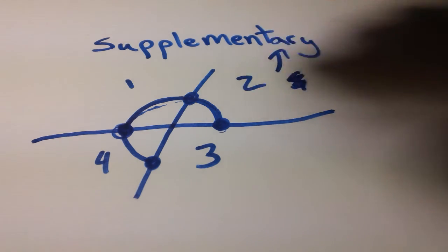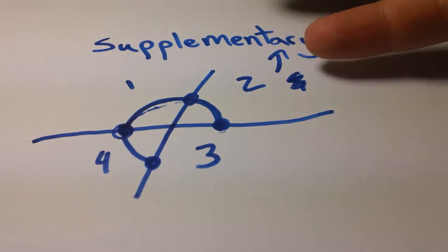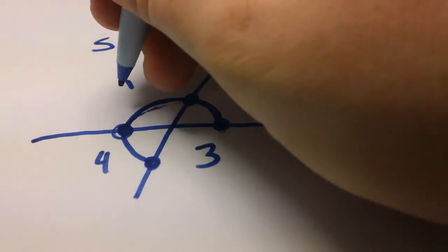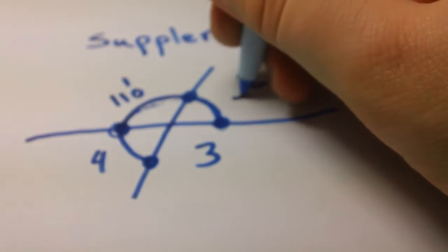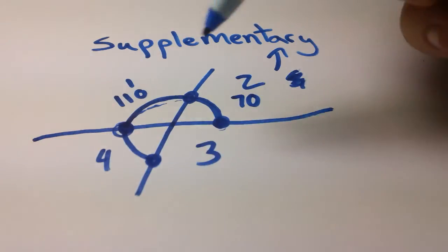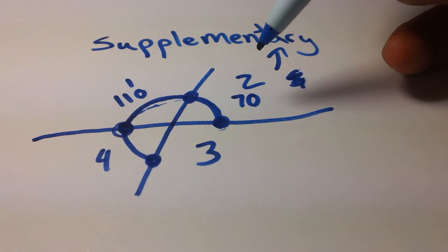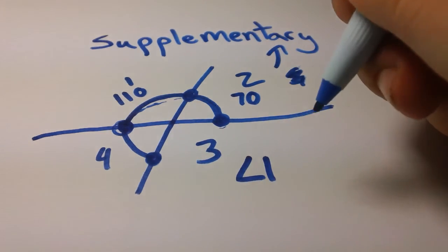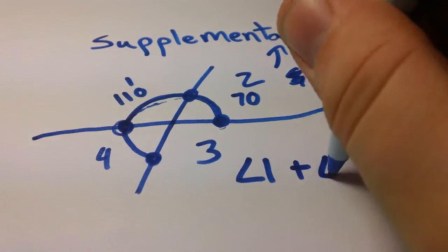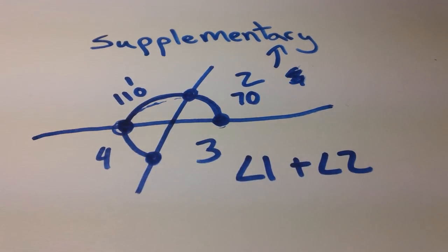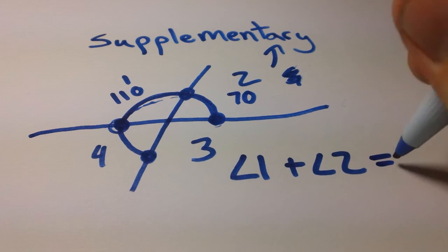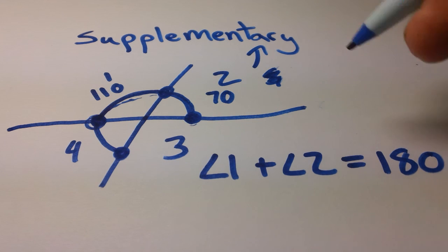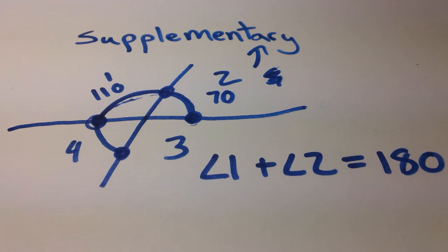Just as we had with the complementary angles, where often we're going to have them represented as variables or equations as opposed to me just writing 110 and 70, we occasionally will have to solve for those as well. As long as you know, let's say angle 1 and angle 2, let's say angle 1 and angle 2 are supplementary angles, as long as you know those two angles combine to form 180 degrees, then you're good. You'll be able to solve most supplementary angle problems.